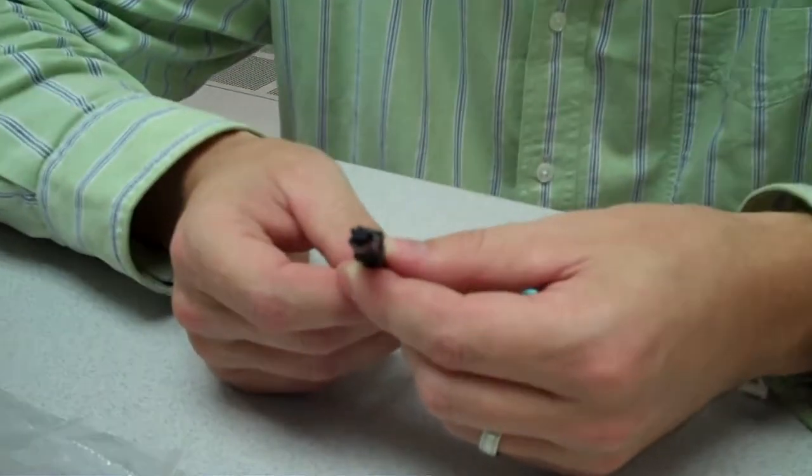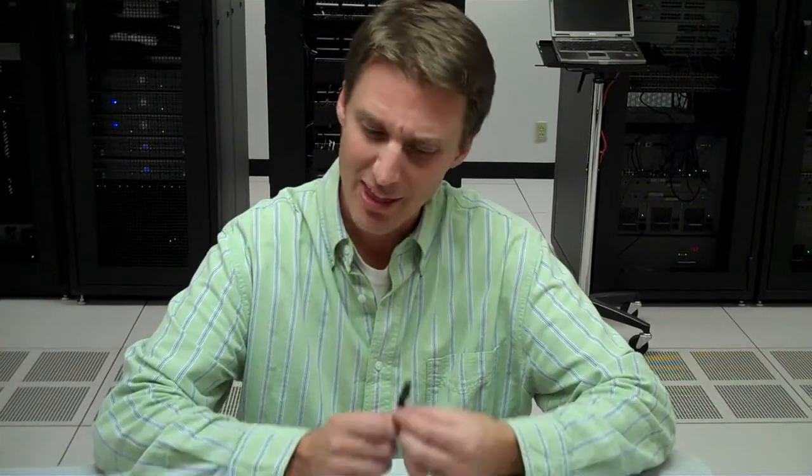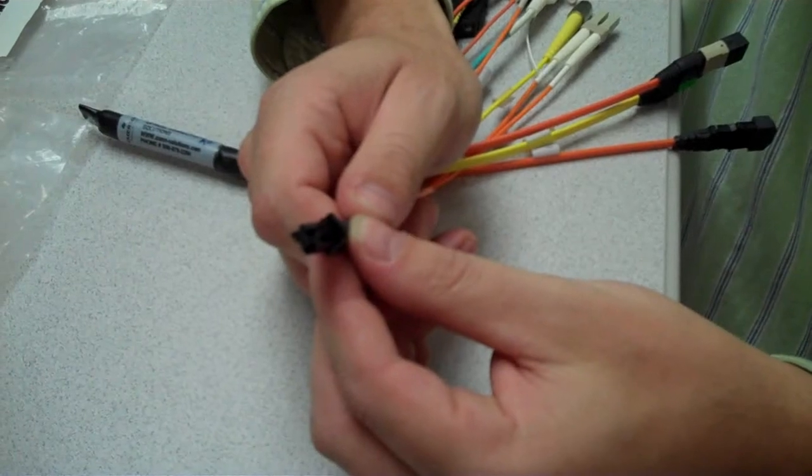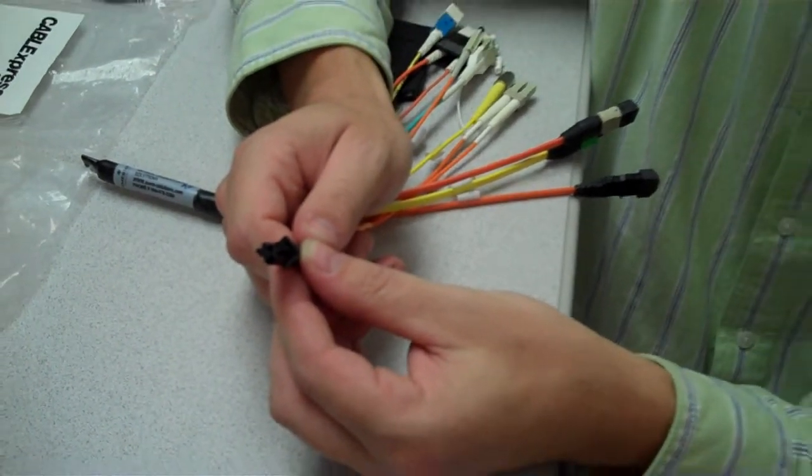This is the MTRJ connector. It stands for Mechanical Transfer Registered Jack. Developed by Amp and Corning but based on a specification from NTT, this looks a lot like an RJ45. That's where the last part of the name came from. Though very small, the MTRJ hasn't taken off like the LC due to poor performance characteristics across the board.